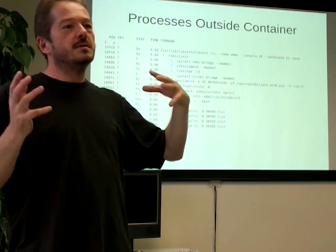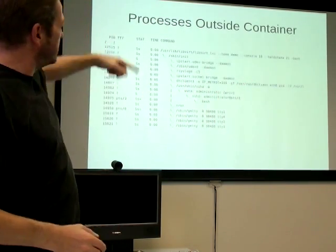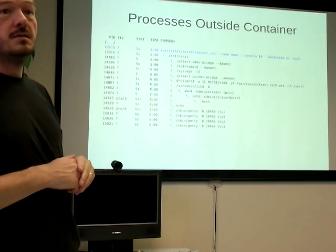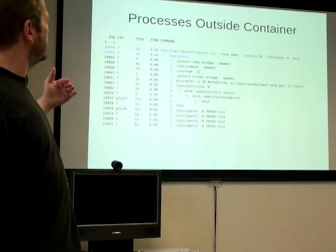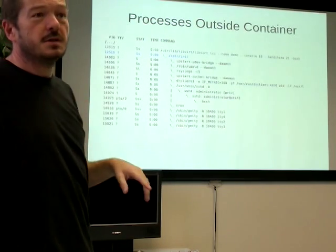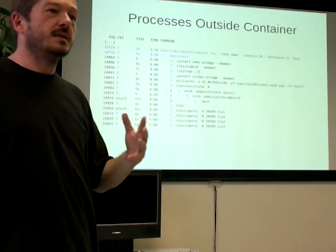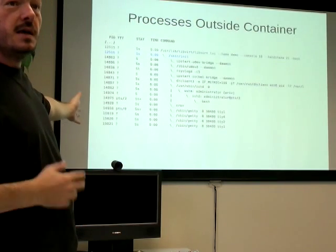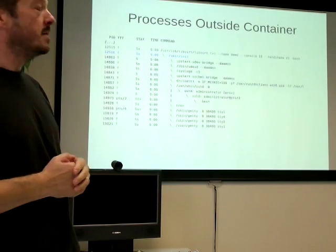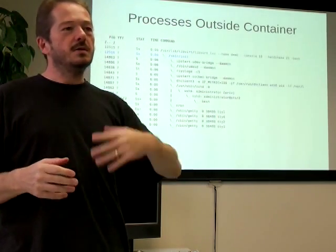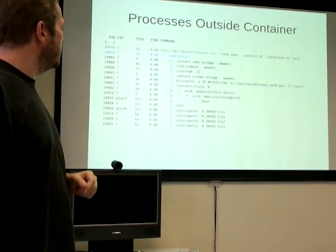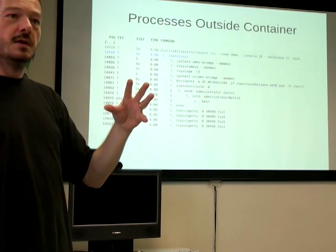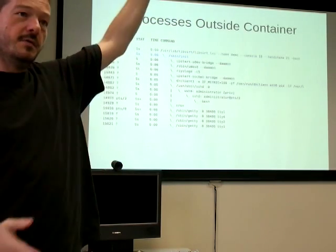If I do a ps from the host — from outside the container — I see all of the same processes. The one at the top is the process used to start the container. Init has a process ID of 12516 — a completely different namespace. All values will be unique outside the host, and inside they'll be different and unique. Inside the container, init is PID 1 as it has to be so that everything gets inherited by it. It's quite useful — if I want to see what's going on inside the containers, I don't have to log into each one individually; I can just go to the host and see the whole lot.